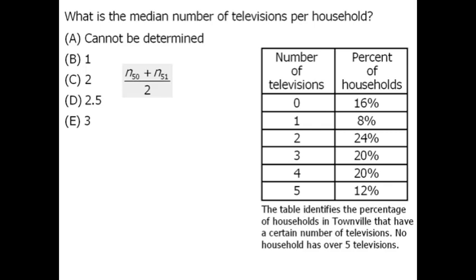Now, let's begin. We're told that 16% of the households have zero televisions. In other words, 16 households have zero televisions. So we'll first list the number of houses with zero televisions.